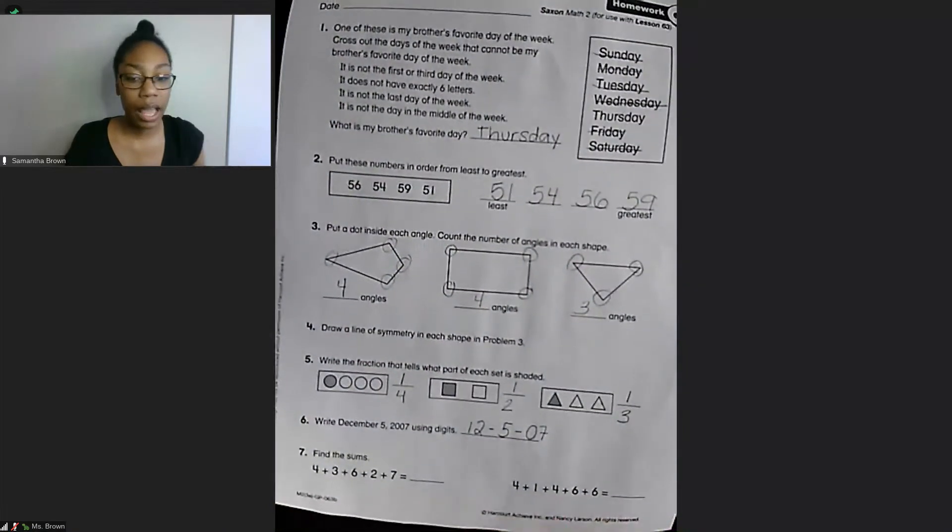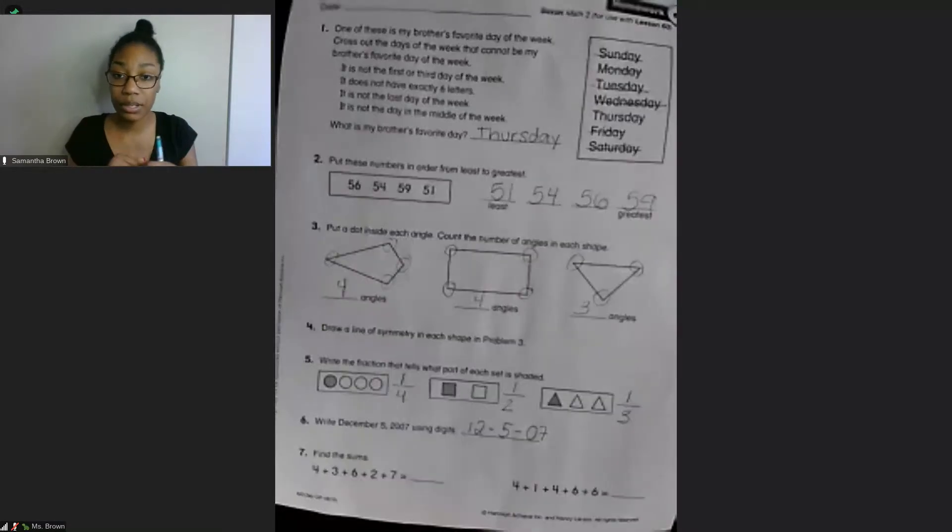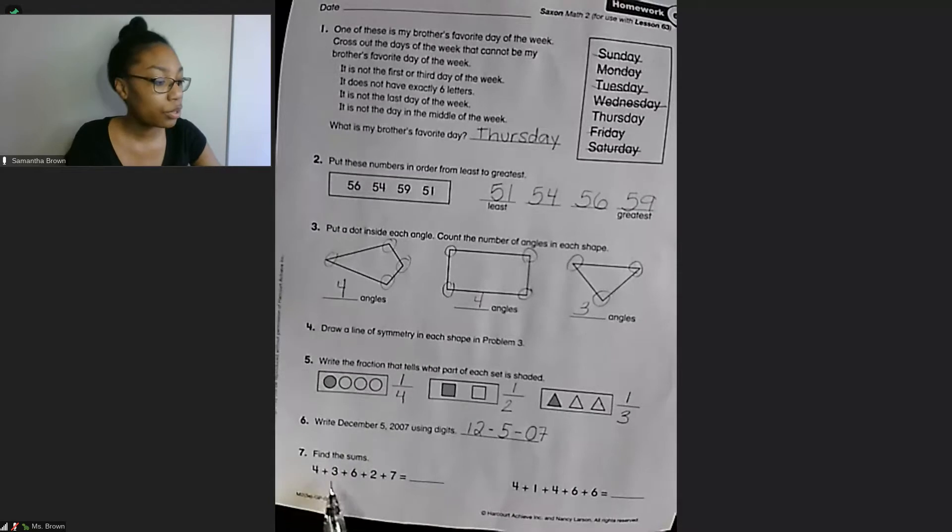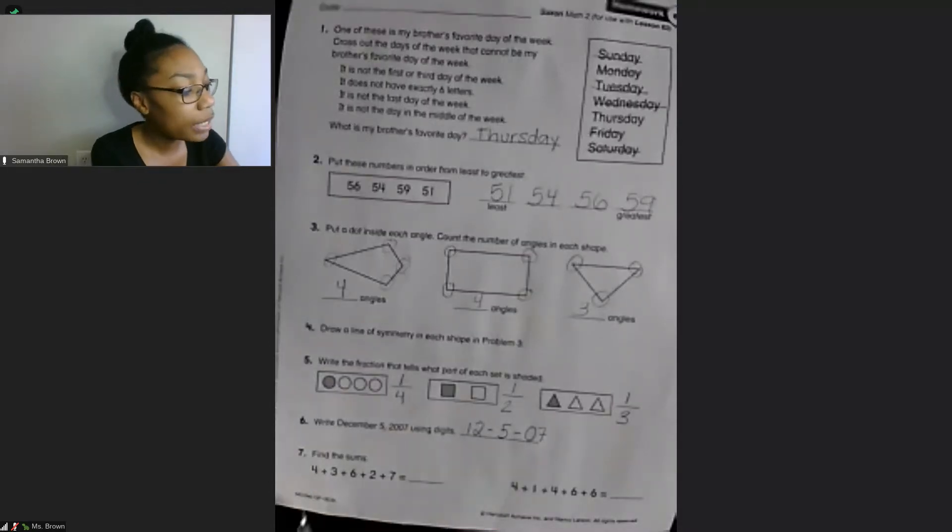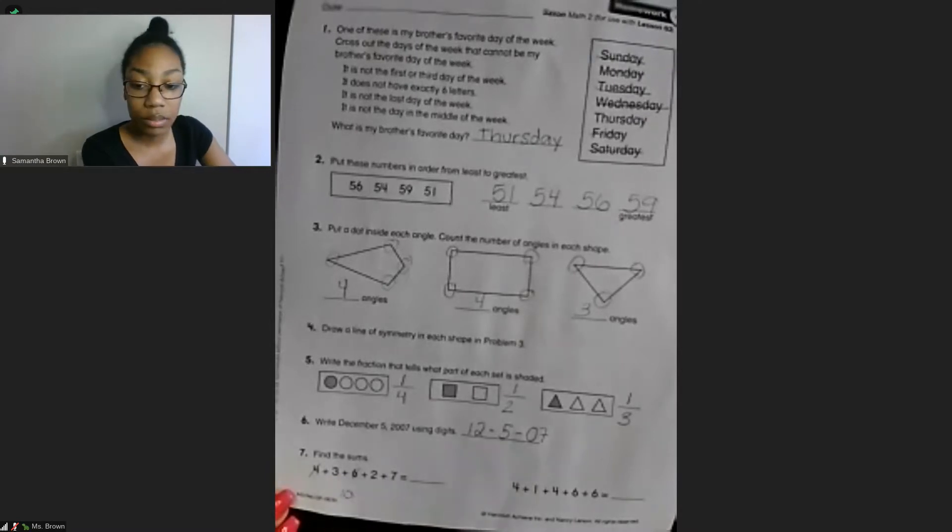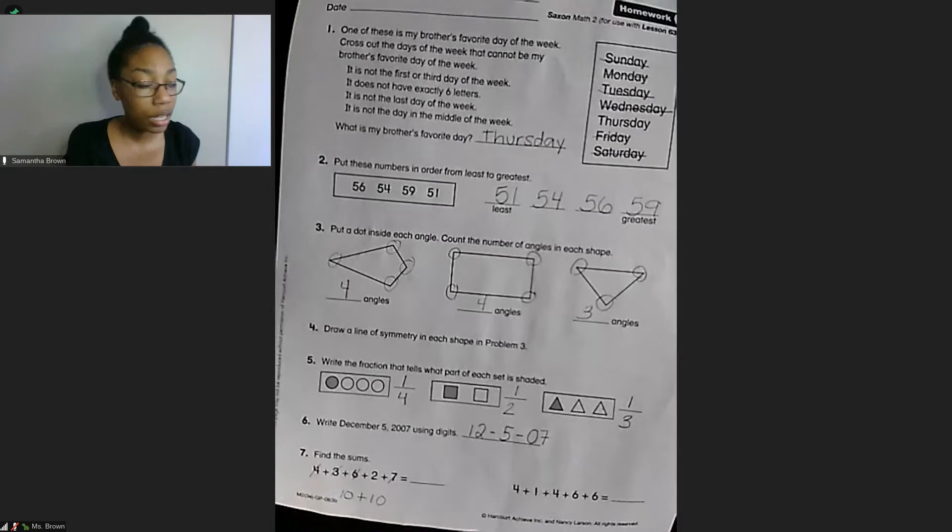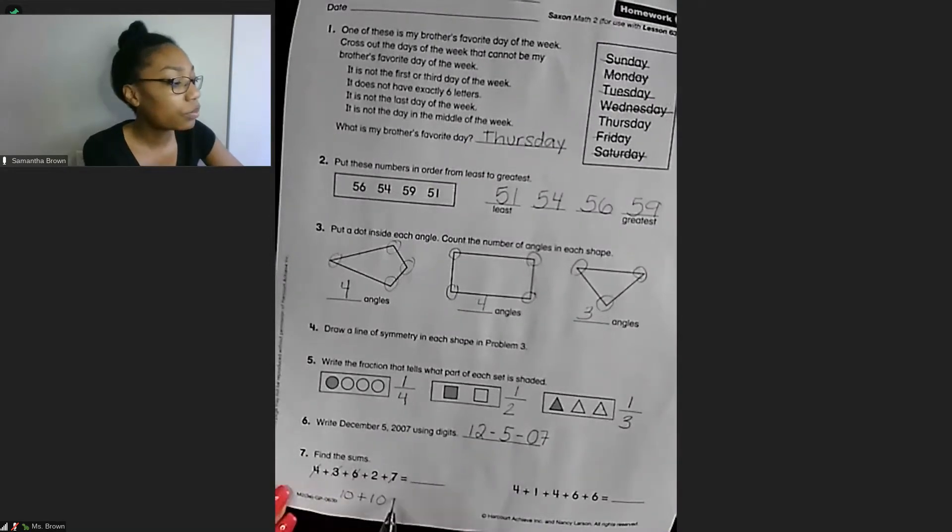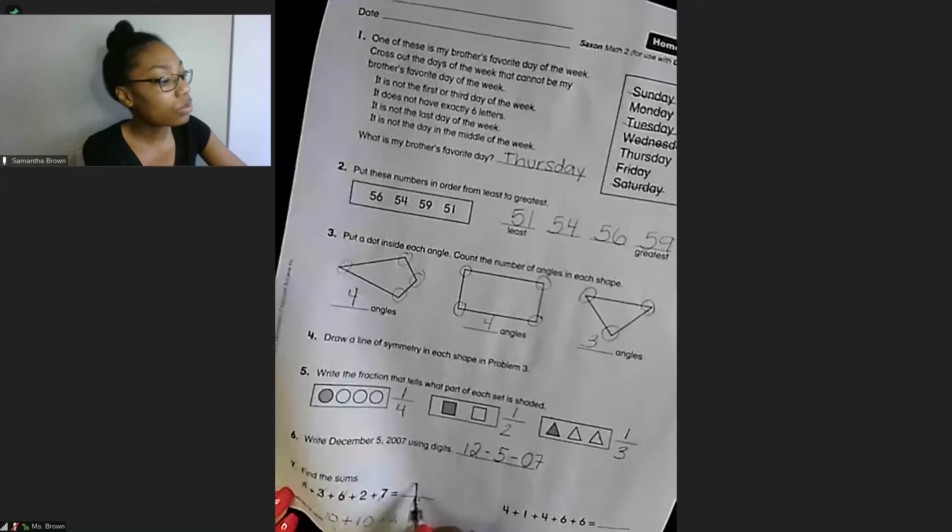And then our last one, we're just adding all those numbers together. So like the last video, I'm going to find numbers that I can easily put together to make 10. So we have 4 plus 3 plus 6 plus 2 plus 7. Right now I'm going to cross off 4 and 6 because that makes 10. And then I'm going to cross off 3 and 7 because that also makes 10. So right now we have 10 plus 10 and the only number we have left is 2. So I know 10 plus 10 equals 20 plus 2 equals 22.